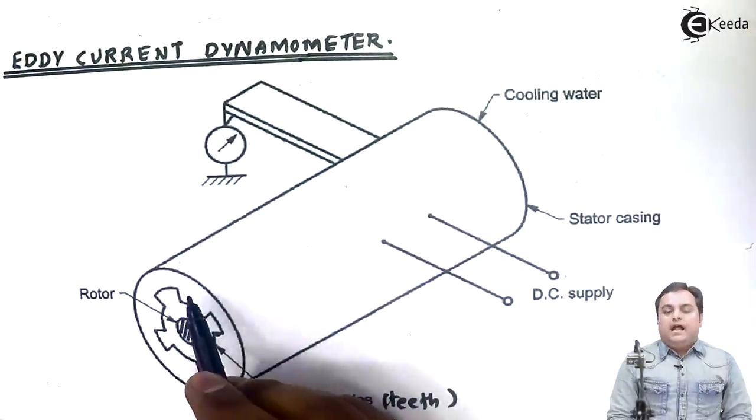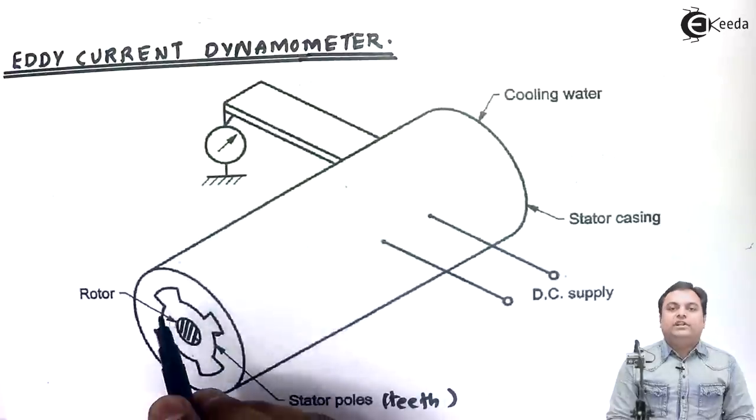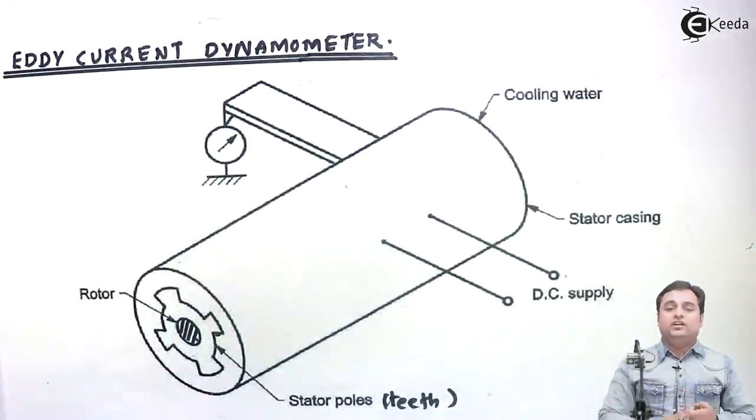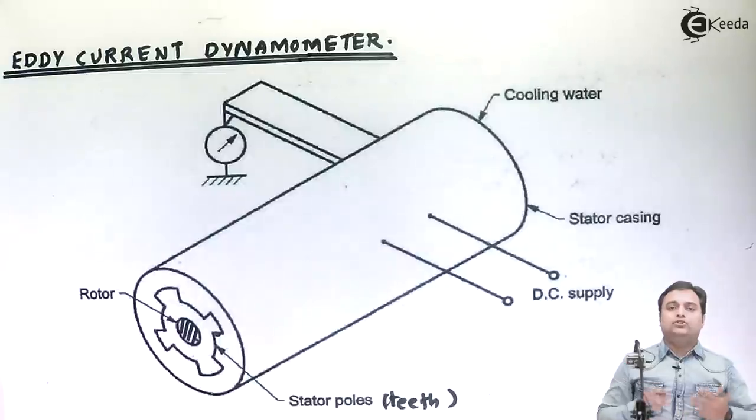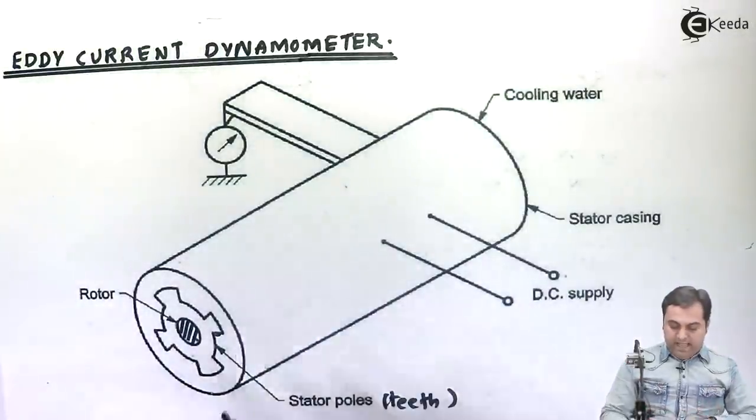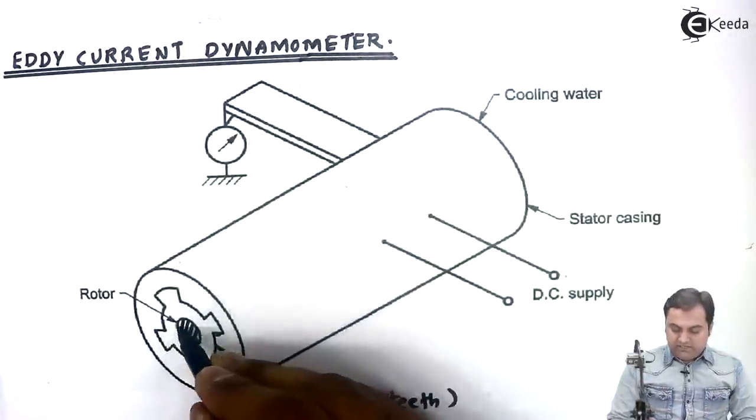Once the rotor starts rotating, that magnetic field is cut. Once the magnetic field is cut, eddy current is generated because of the loss of magnetic field.